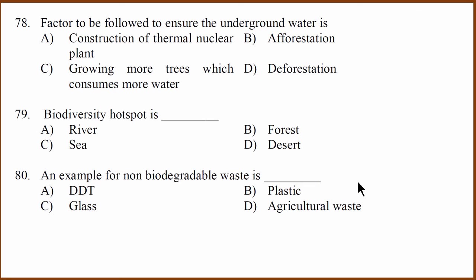Last three questions. What is that we need to ensure underground water? To ensure underground water we need afforestation. Growing more trees helps underground water. Biodiversity hotspot. Biodiversity hotspot will have more diversity. That will be forest.